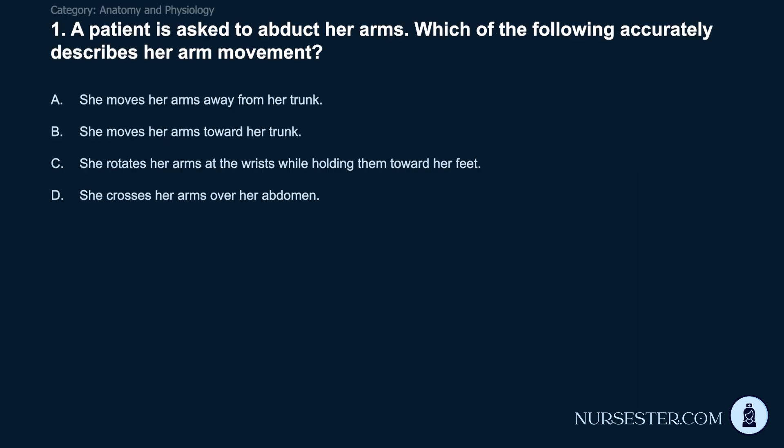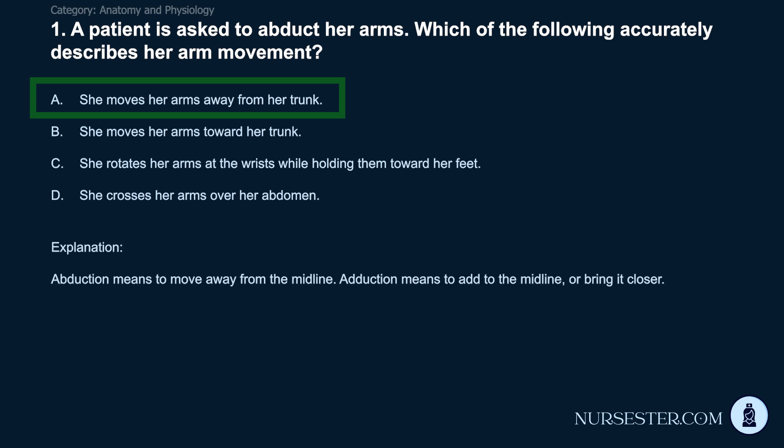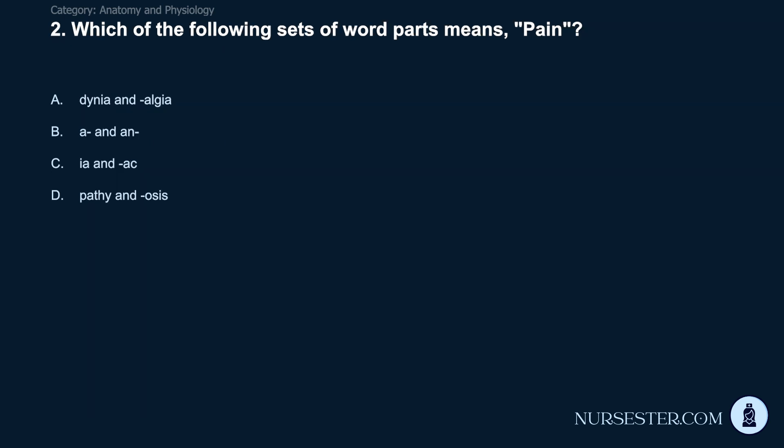Question 1: A patient is asked to abduct her arms. Which of the following accurately describes her arm movement? A) She moves her arms away from her trunk. B) She moves her arms toward her trunk. C) She rotates her arms at the wrists while holding them toward her feet. D) She crosses her arms over her abdomen. Correct answer: A. She moves her arms away from her trunk. Abduction means to move away from the midline; adduction means to add to the midline or bring it closer.